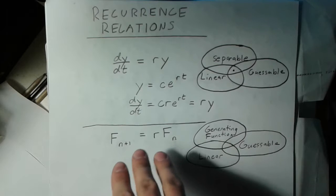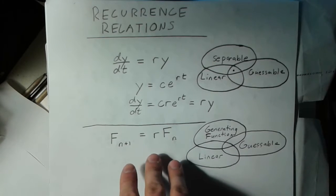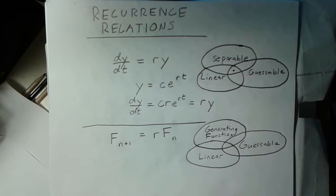Similarly, with the recurrence relations, this one is actually guessable and I'm going to show how we can guess the solution and prove it using induction in the next video. But this is also what is considered a linear recurrence relation and so we can solve it using very similar methods to the differential equations and we can also solve it using a method called generating functions. So this one also has a lot of different ways to solve it.